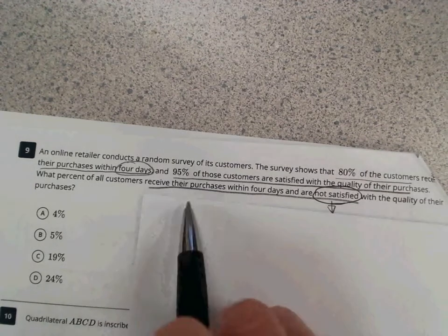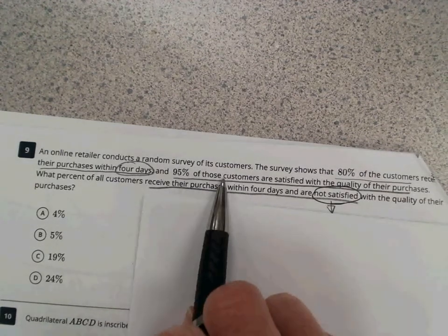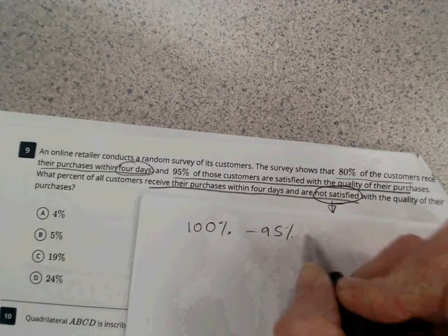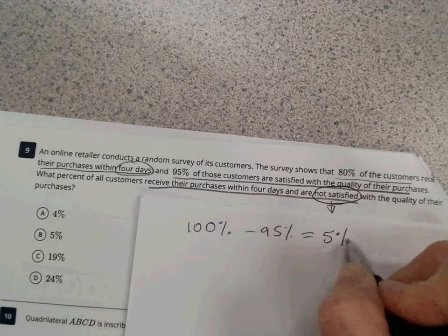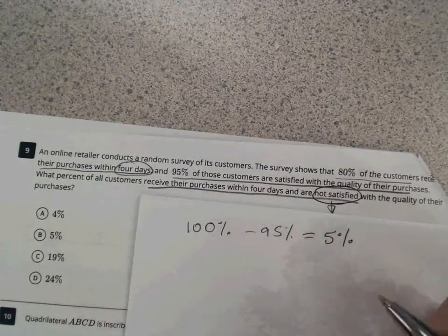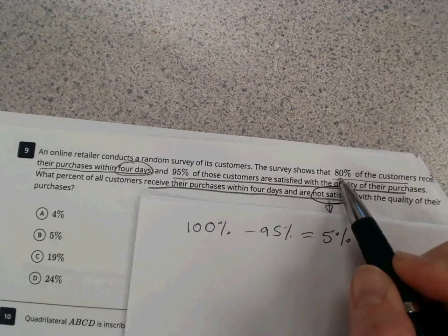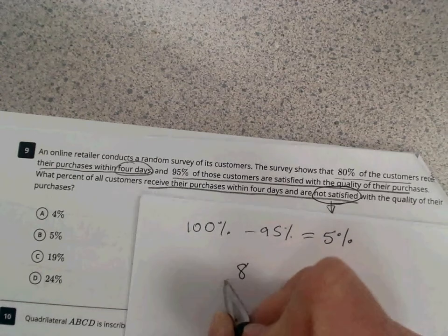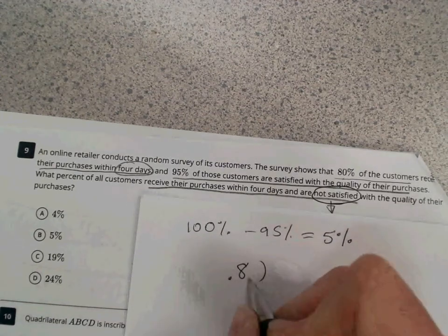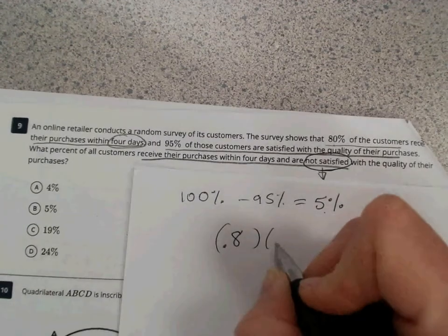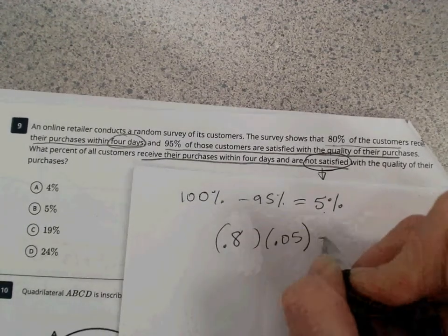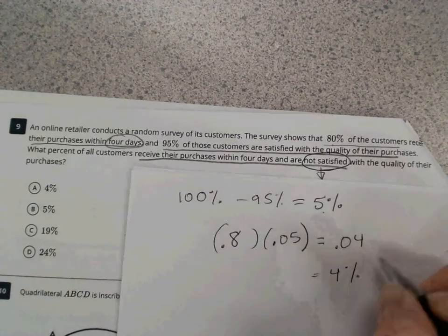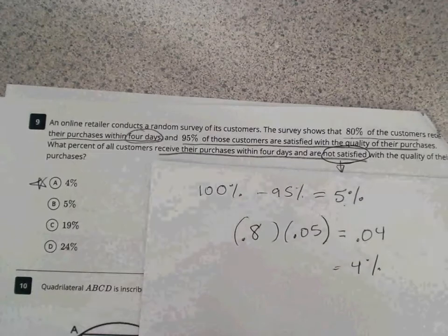So, if we have 95% are satisfied when they receive within four days, then that leaves us with 100% minus 95% or just 5% are not satisfied. Of, of means multiply, the 80% that received their purchases within four days. So, we're just going to literally do 80% as a decimal would be 0.8. And we're going to multiply that times 5% as a decimal, which is 0.05. And we get 0.04. When we multiply those, which is equal to 4% or answer choice A.